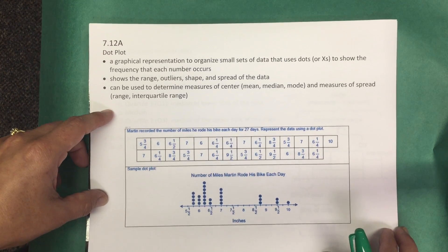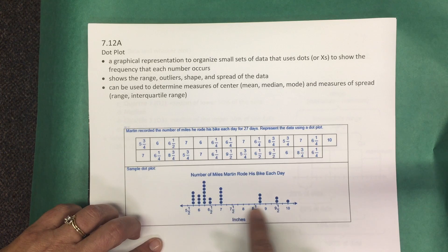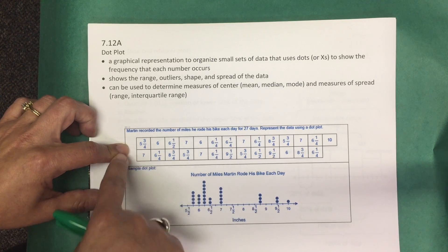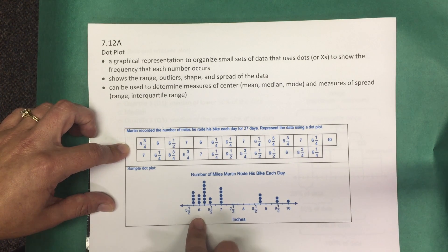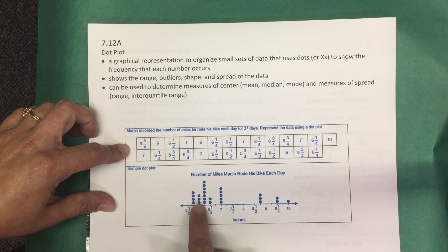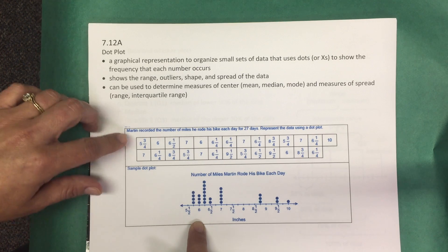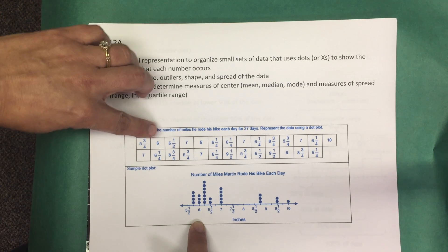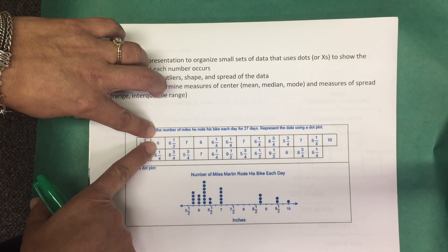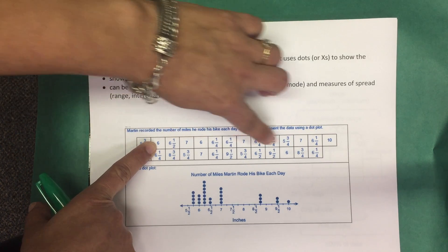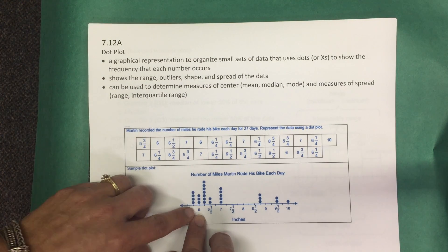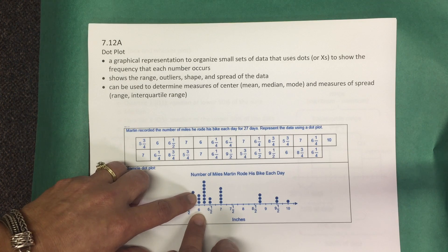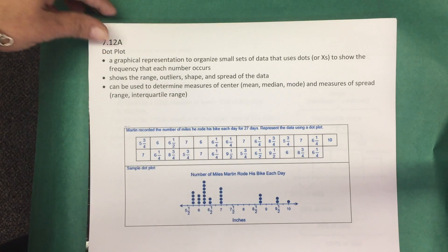Here's an example of a dot plot. The data is represented in this dot plot. For example, if we look above the number six on the dot plot, there are three dots. That means the value of six is represented three times in the data — here's a six, here's a six, here's a six — so those three sixes are represented by three dots above the number six on the number line.